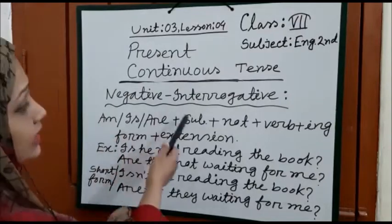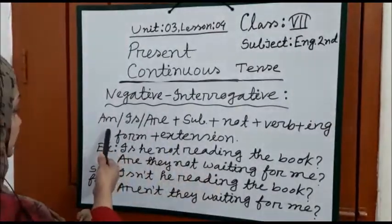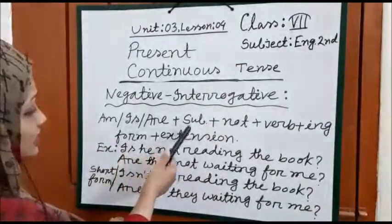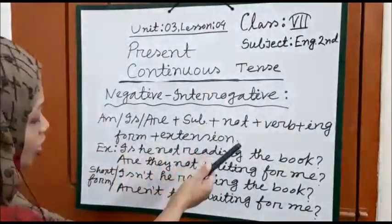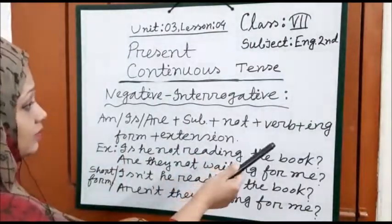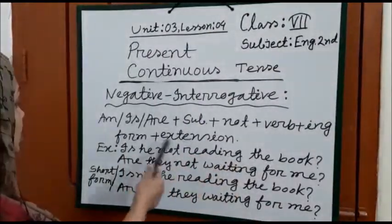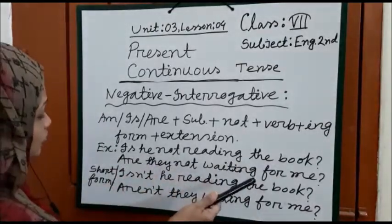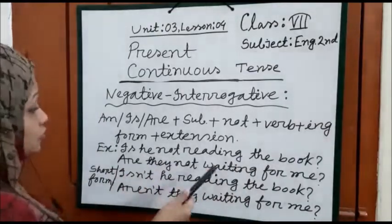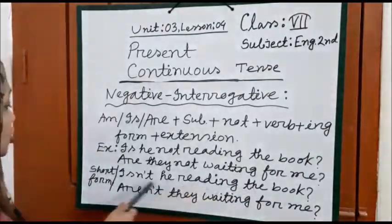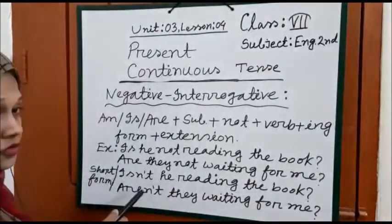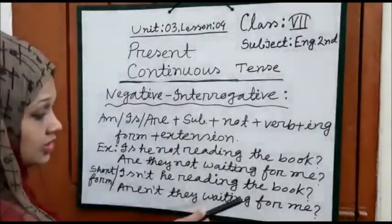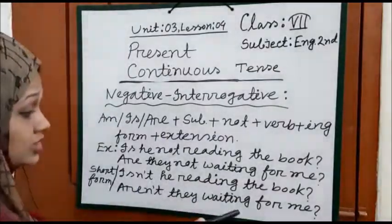Now I am going to show you the negative interrogative form. The structure will be: Am/Is/Are + subject + not + verb + ing + extension. The examples are: Is he not reading the book? Are they not waiting for me? In short form: Isn't he reading the book? Aren't they waiting for me?